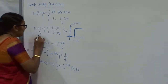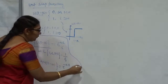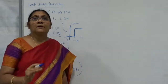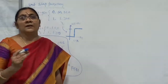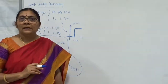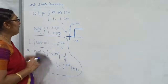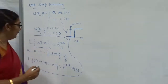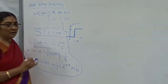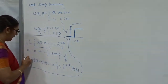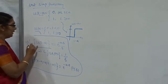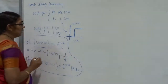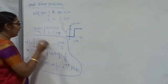In some cases, some problems will ask you to express the given function in terms of unit step function and then find out the corresponding Laplace transform. In such cases, we use the following two results. The first one: the Laplace transform of U of T minus A is nothing but e to the power of minus AS divided by S.